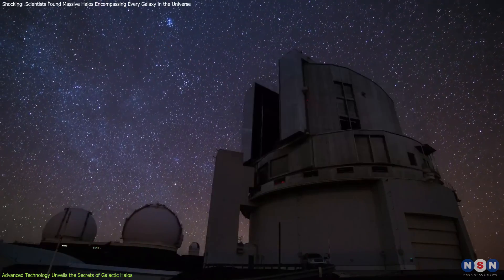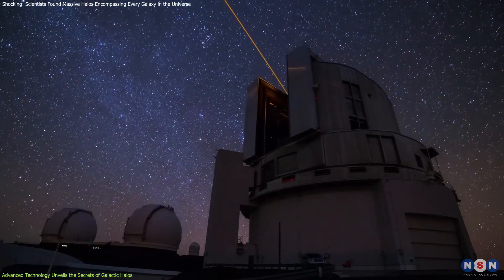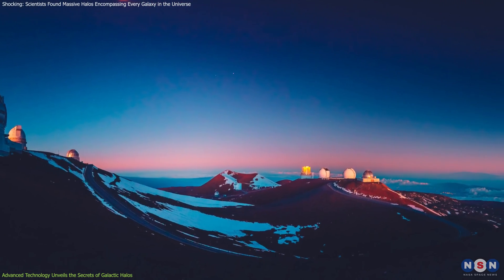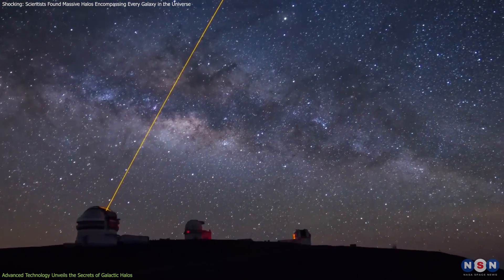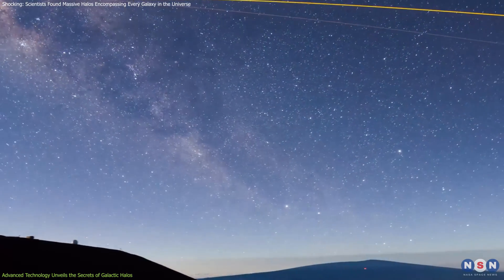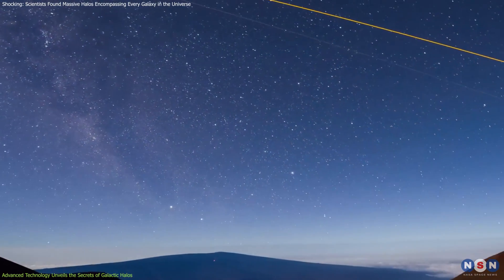The Keck Telescope, one of the largest optical telescopes in the world, is ideally positioned atop the Mauna Kea volcano in Hawaii. The site's high altitude, clear skies, and minimal light pollution make it one of the best locations for astronomical observations.